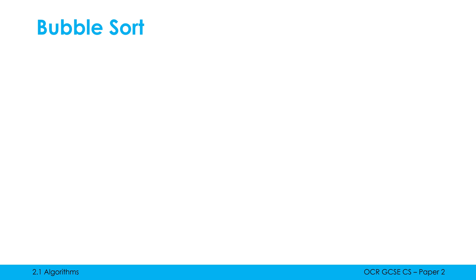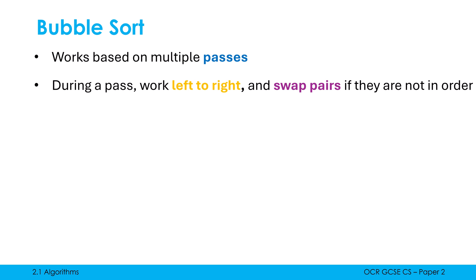Now bubble sort is one of our standard algorithms for how to sort. Searching, we only really have linear and binary, but there are quite a few different sorting algorithms. I learned maybe about eight or nine at university. They all have pros and cons, all have slightly different methods for putting the data into order. Bubble sort works based on multiple passes through the data set. So a pass is a single movement from left to right. During a pass, we work left to right, and we swap pairs if they are not in order. So we look at two items at a time, and we swap them if they're not in the correct order.